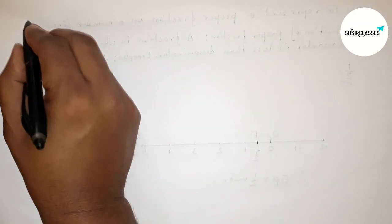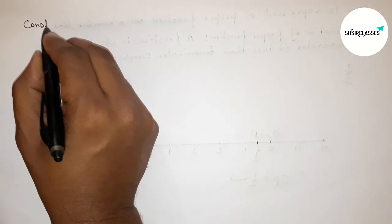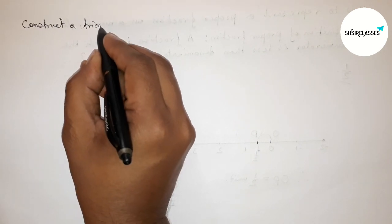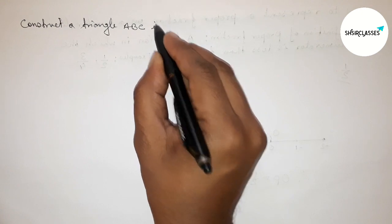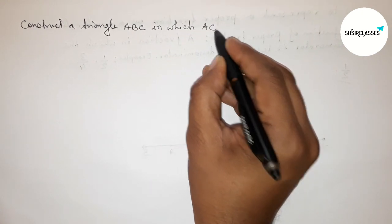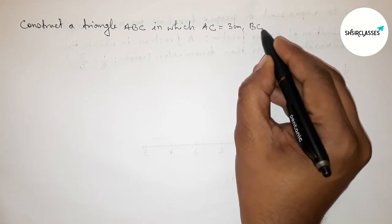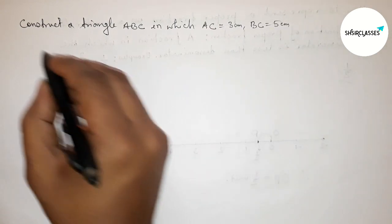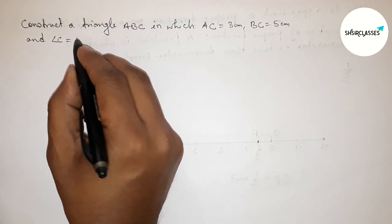Hi everyone, welcome to SI Share Classes. Today in this video we have to construct a triangle ABC in which AC equals 3 centimeters, BC equals 5 centimeters, and angle C equals 60 degrees. So let's start the video.